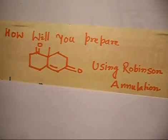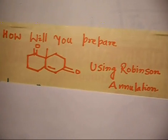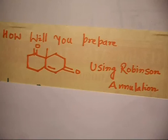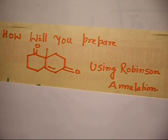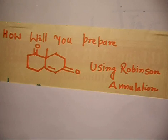Let us discuss a problem. You have been given a compound — let us draw the diagram — and you have to tell me how will you prepare this compound. The method is called Robinson annulation. Even if you don't know anything about Robinson annulation, there is no problem; you can still do this problem.